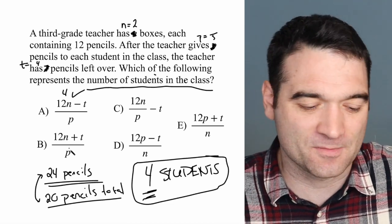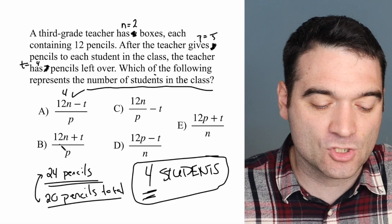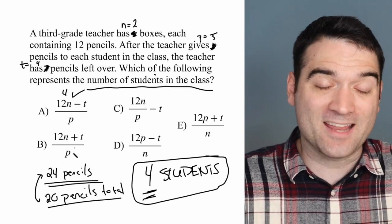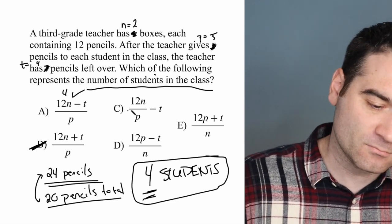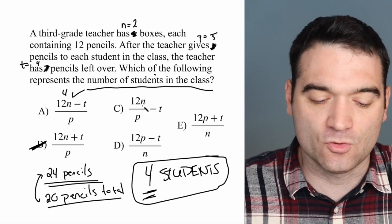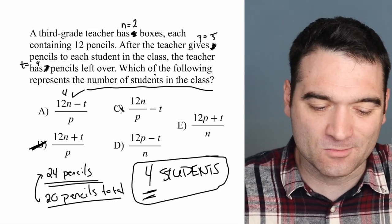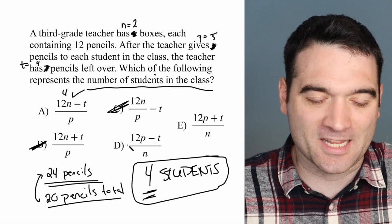Let's double-check the other answers just to be safe. 12 times 2, 24, plus 4, 28 divided by 5? No. Well, 12 times 2, 24 divided by 5 is a decimal. Done. I can't have a decimal number of students.